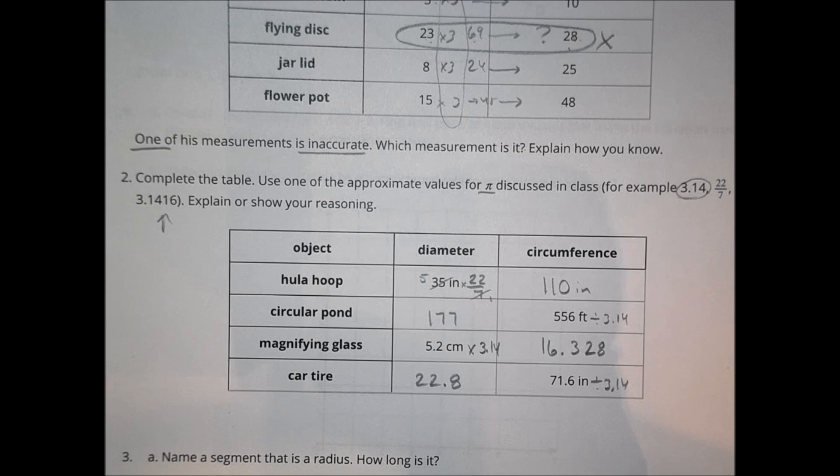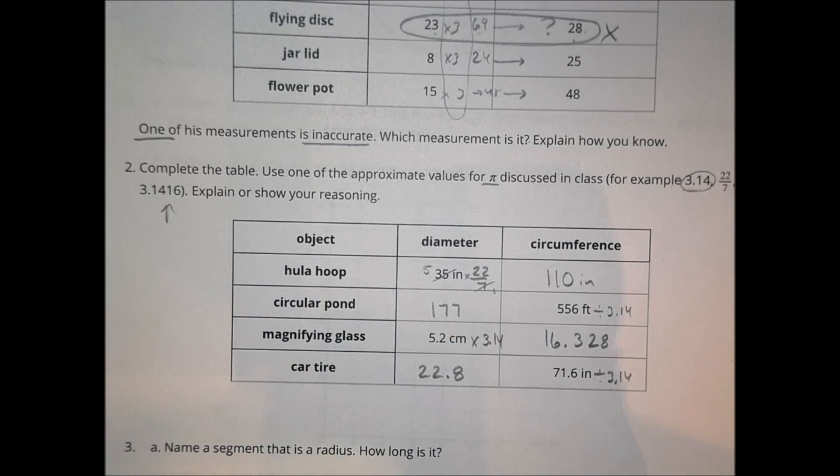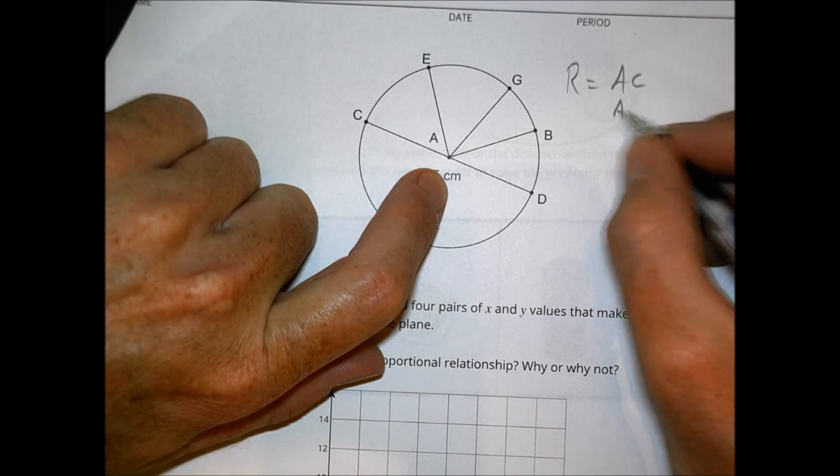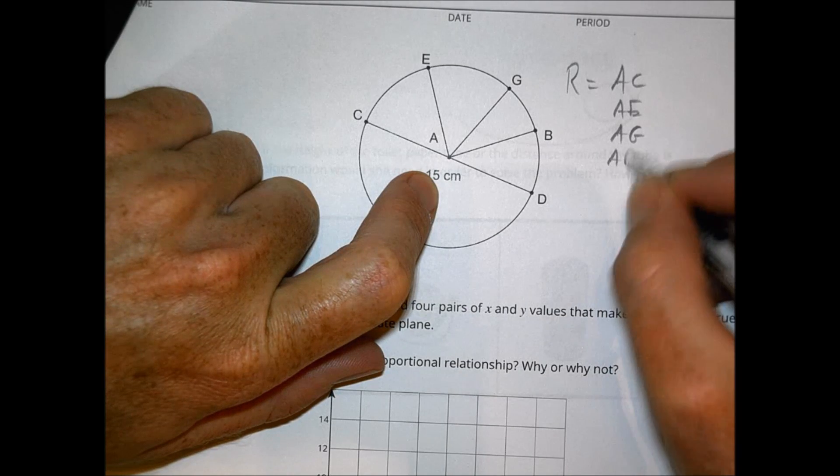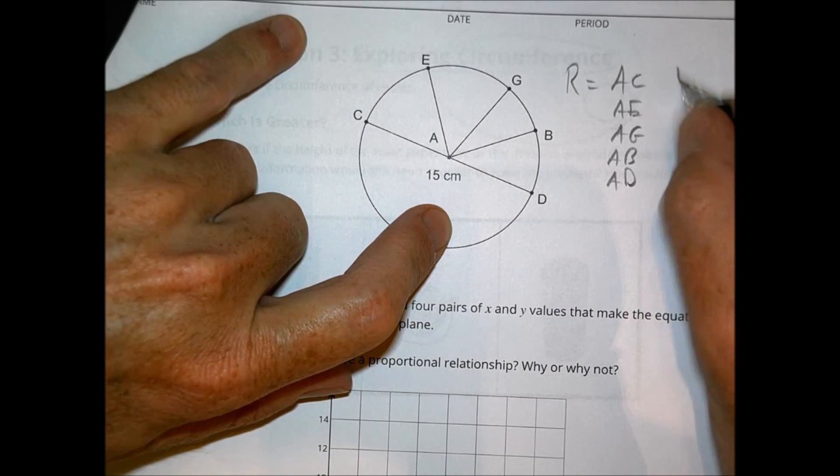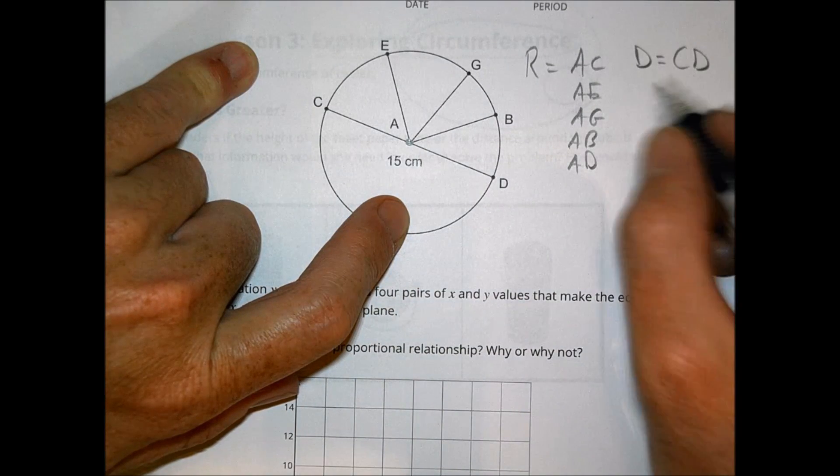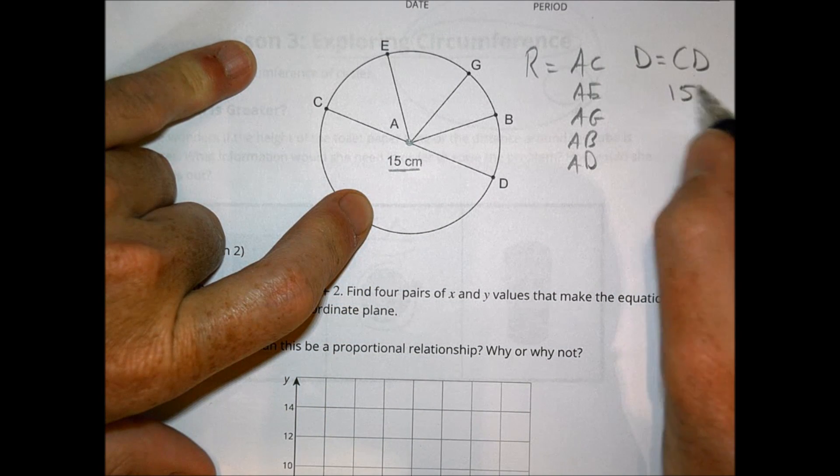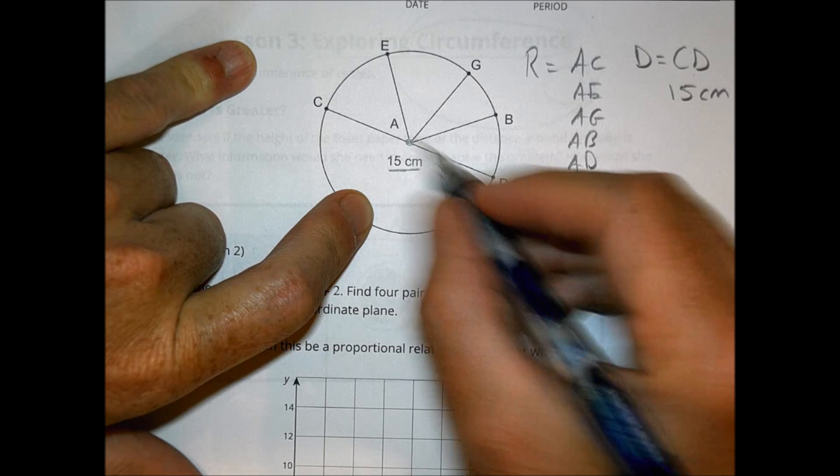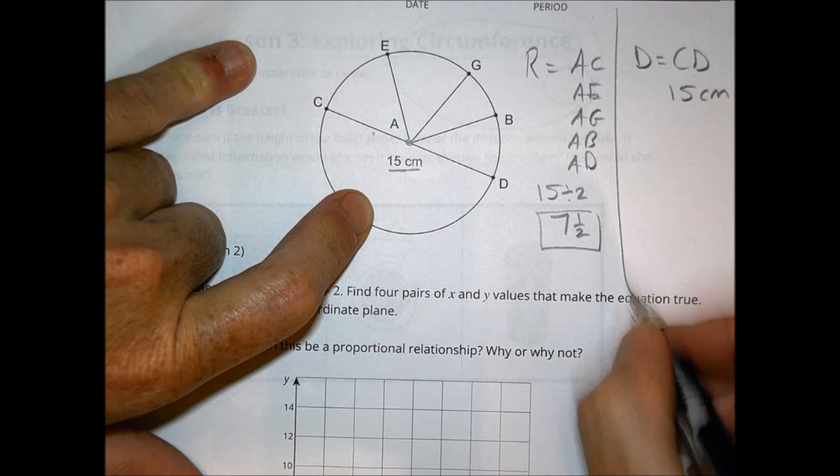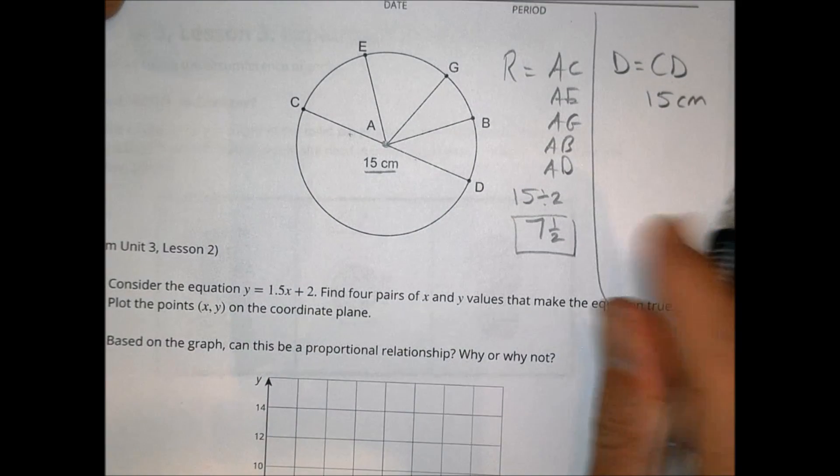For what's up next, we want to name a segment that is a radius and then name a segment that's a diameter. In terms of our radius, we could have A to C, A to E, A to G, A to B, and A to D are all a radius. Our diameter, though, is definitely only going to be C to D. It has to go all the way across and through the midpoint. The diameter's value here listed is at 15. So we know our value of our diameter is 15. Our radius is two diameters together. So it's 15 divided by 2, which would be 7 and a half. So our radius is 7 and a half and our diameter is 15 right there.